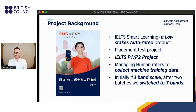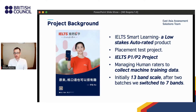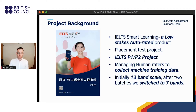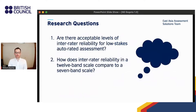Today's session will zoom in on the initial phase of developing a task for ISO, which taps into elements of the IELTS speaking test Part 1 and Part 2 construct. For this task we developed a mechanism to collect human ratings that will eventually train a machine rater. This iterative process involved a 13-band scale and a seven-band scale, producing some interesting data, and the analysis of this data is the focus of today's talk.